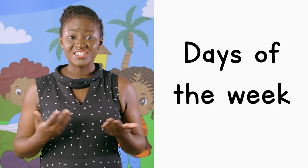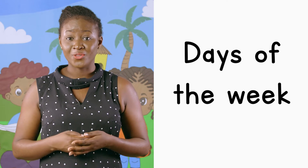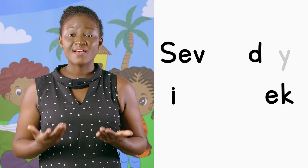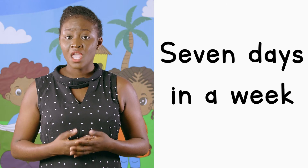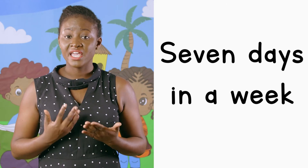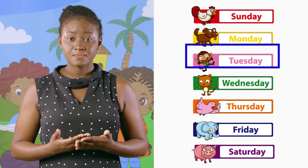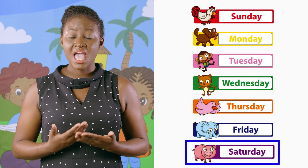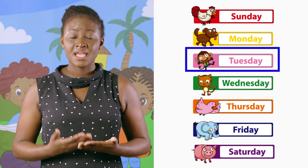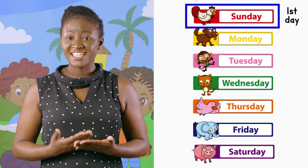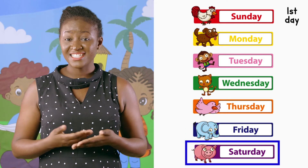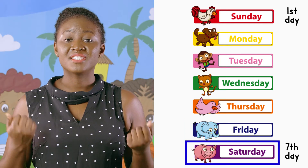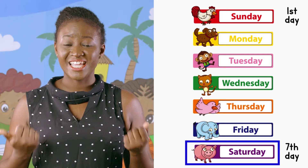And these are the days of the week. Well done. We have seven days in a week. The first day is Sunday and the last day is Saturday. Sunday is the first day. Saturday is the seventh day. We have seven days in a week.